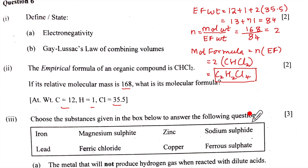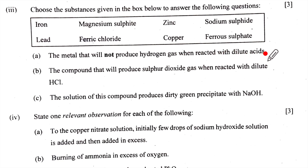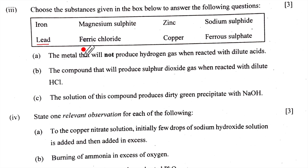Part three: choose substances from the box — iron, lead, magnesium sulfide, ferric chloride, zinc, copper, sodium sulfide, ferrous sulfide — to answer the following. A — the metal that will not produce hydrogen gas when reacted with dilute acids: lead, because PbCl₂ forms an insoluble coating that stops the reaction, and with sulfuric acid lead sulfate forms similarly. The answer is lead.